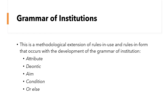Grammar of institutions. This is the methodological extension of rules in use and rules in form. This occurs with the development of the grammar of institutions, which is the theory that generates structural descriptions of institutional statements. This description is in the book on page 229.